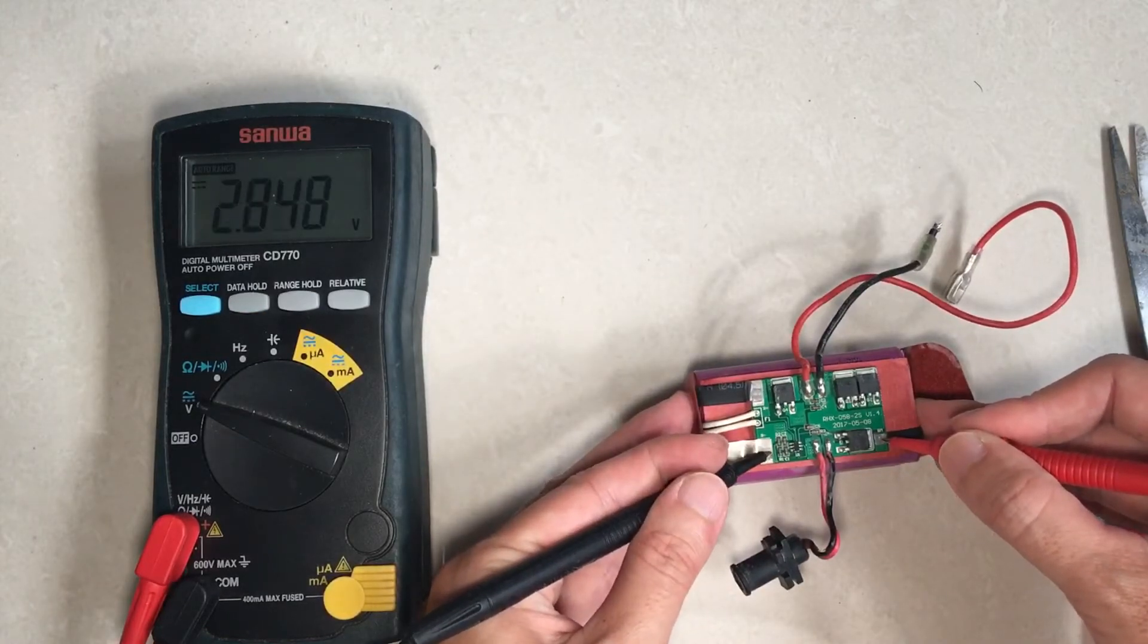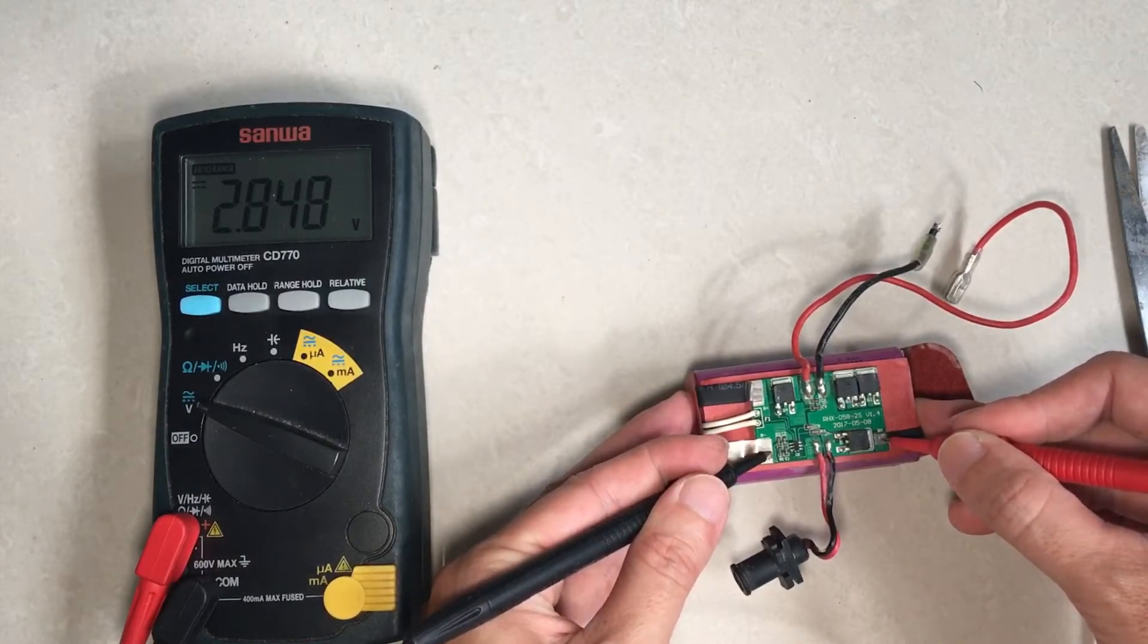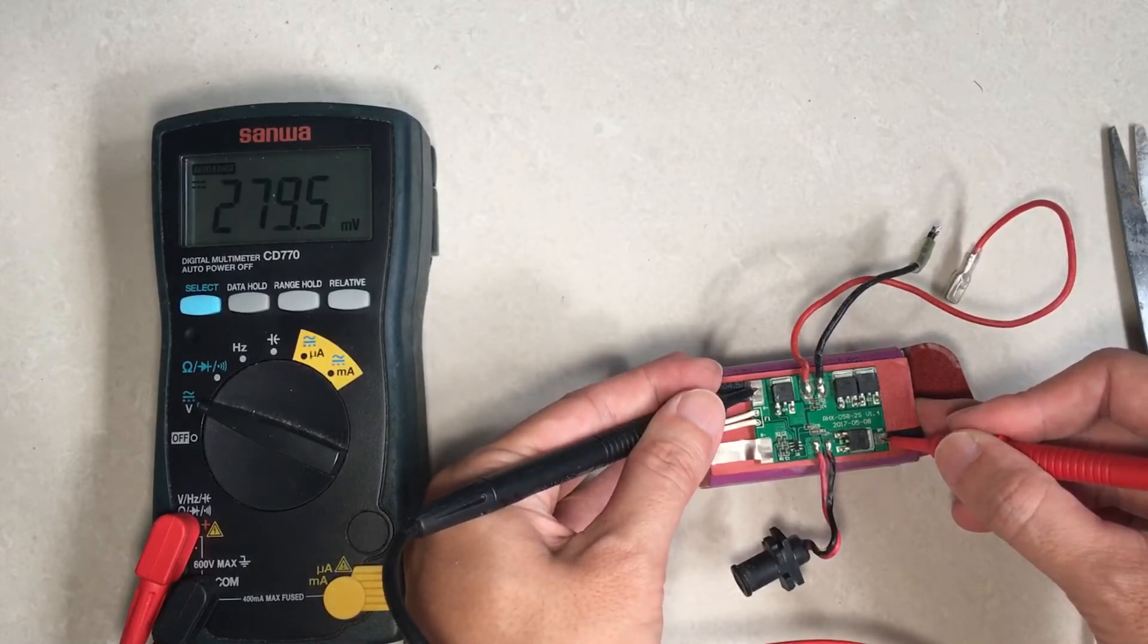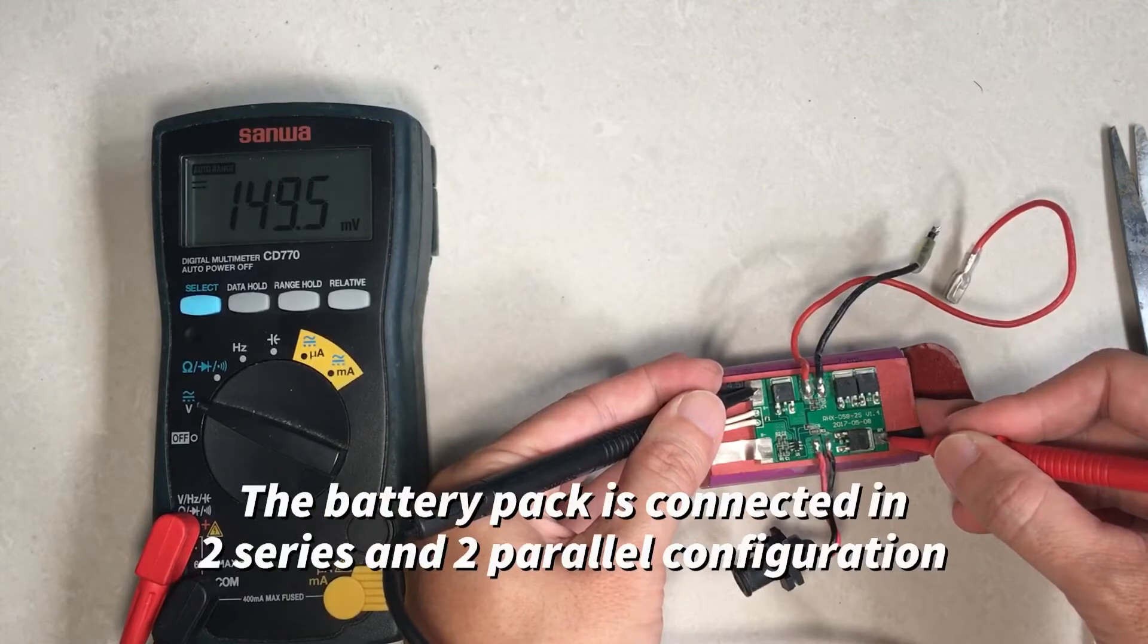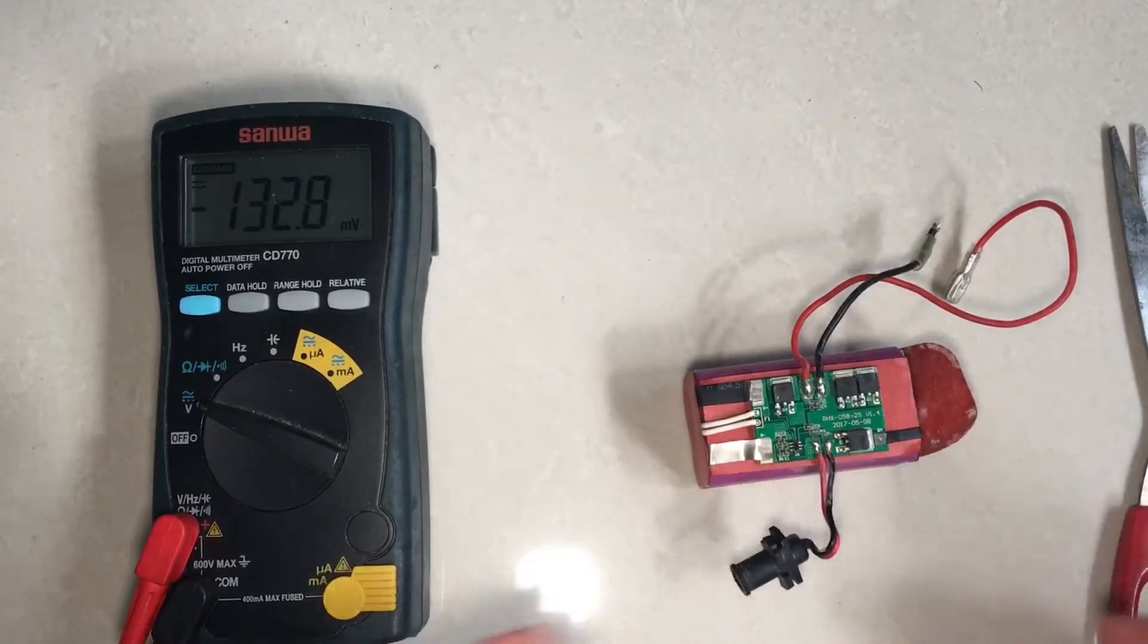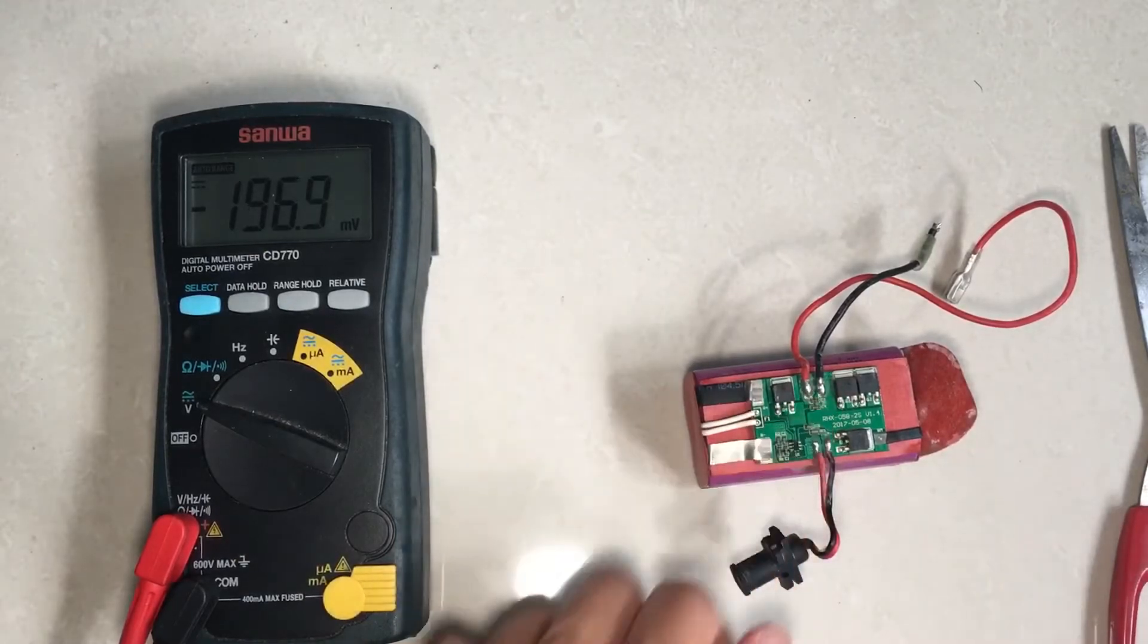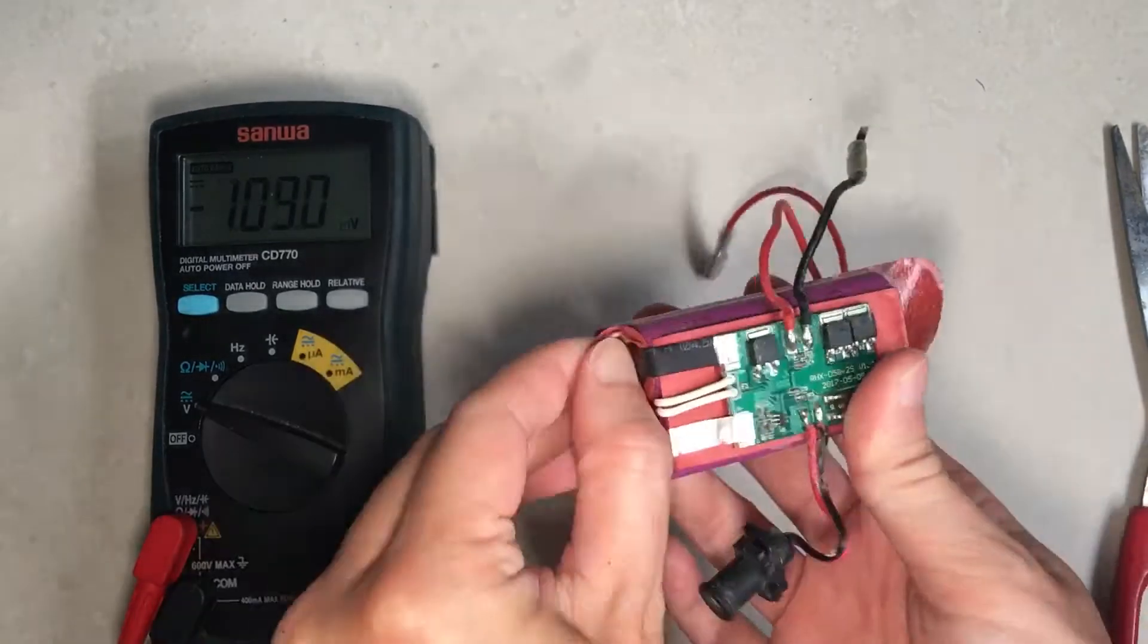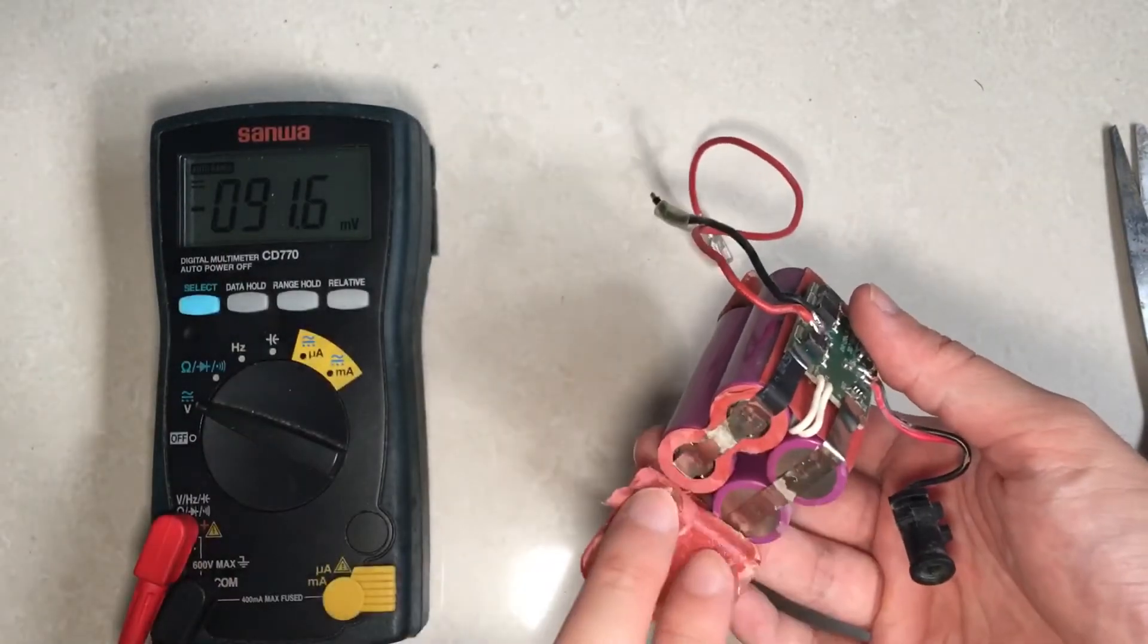Similarly we're getting 2.8 volts on one pair of the cells and none on the other pair. So this voltage is way too low to allow the control board to work.